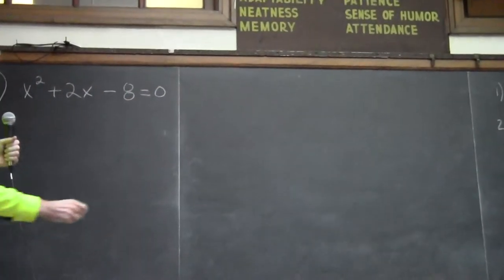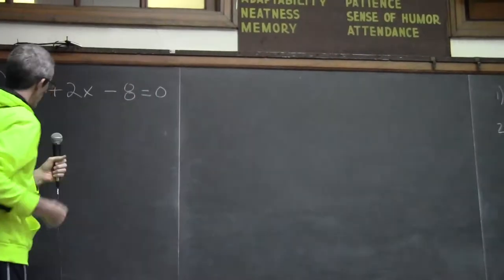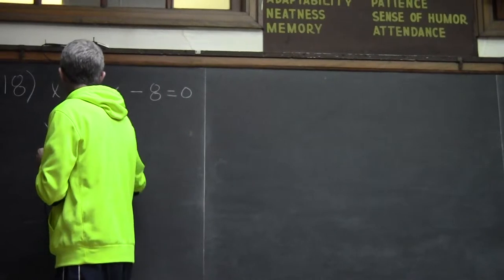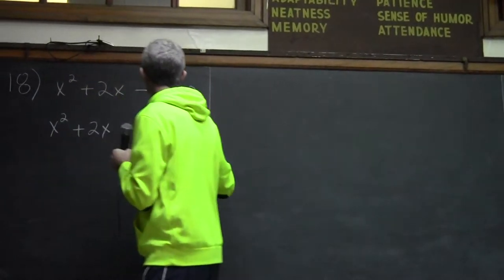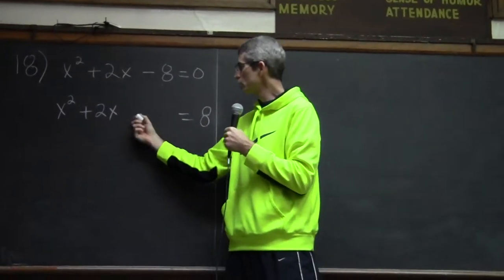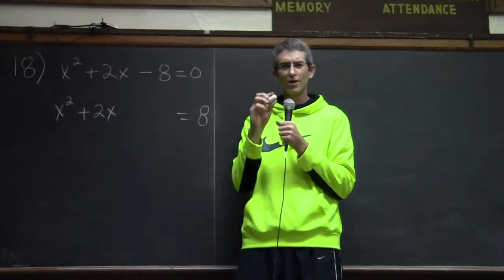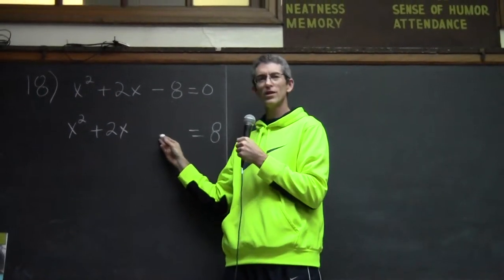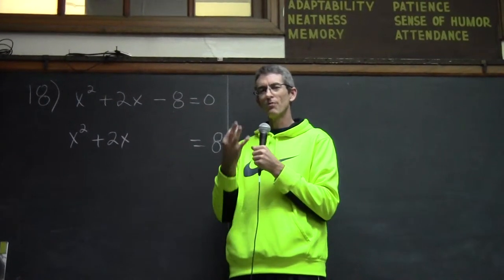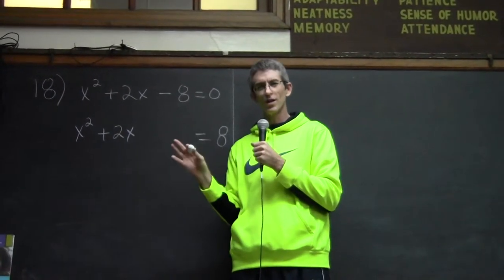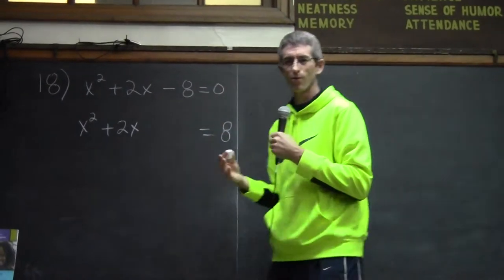Number two, you need to bring the constant c to the other side. So I'm going to rewrite this as x squared plus 2x equals 8. So I brought the 8 over, and I'm leaving a little space here. And what we're doing here is we're going to try to be skillful, and we're going to figure out what number could go here so that I could create a perfect square situation. So let's just do it, and then you'll hopefully see how that worked.